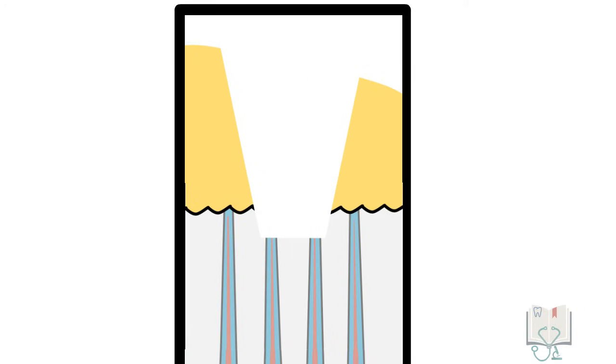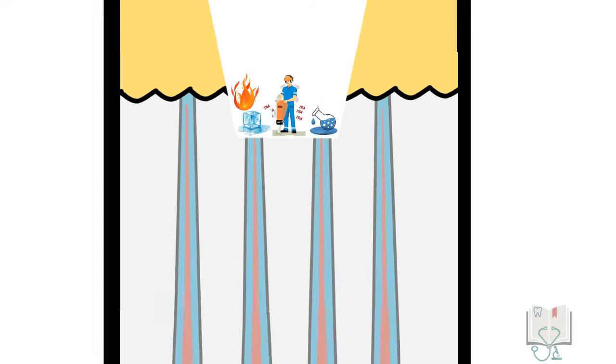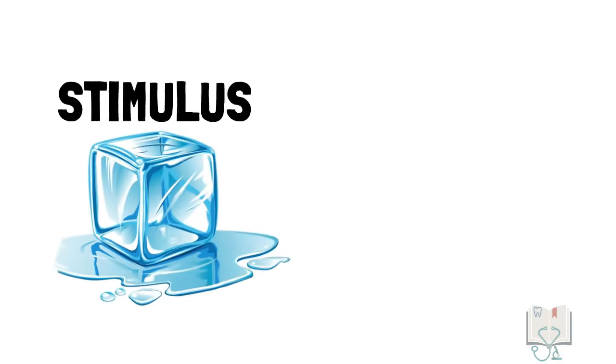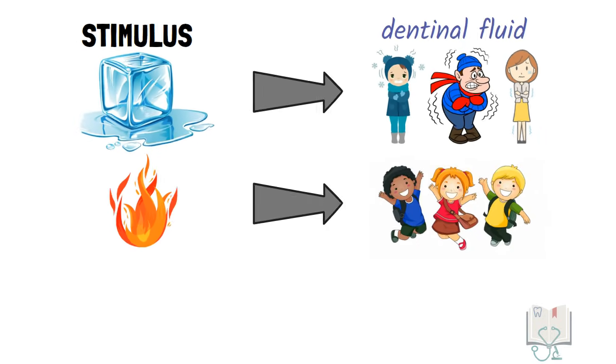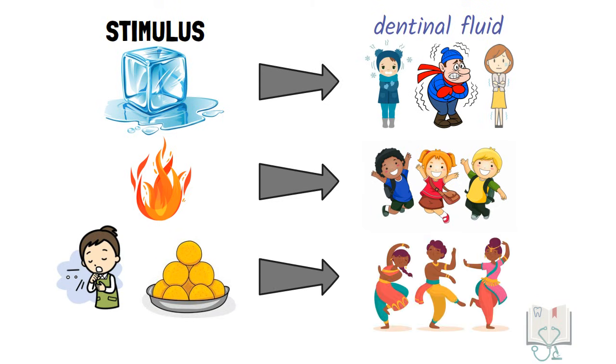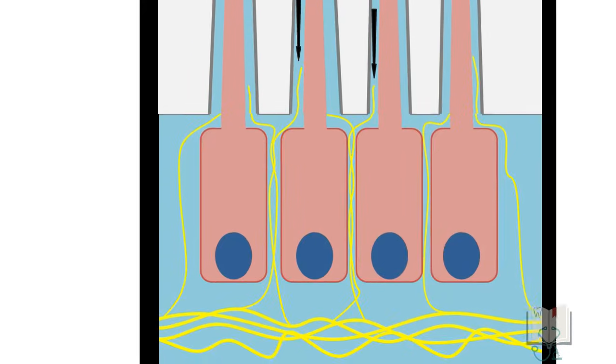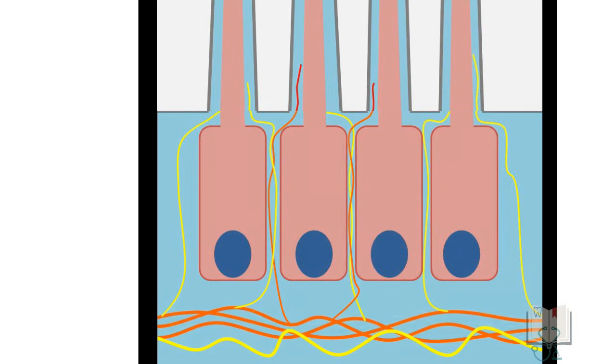That is, when dentin gets exposed and the dentinal tubules open to the outer environment, any stimulus—be it physical, thermal or chemical—causes movement of this fluid. For example, cold stimulus causes contraction of dentinal fluid, heat causes expansion of this fluid. Air blasts or consumption of sweet food act as a dehydrating substance and again cause movement of the dentinal fluid. This fluid movement then in turn mechanically stimulates the nerves present in the dentinal tubules in the deeper layer and causes dentinal sensitivity.